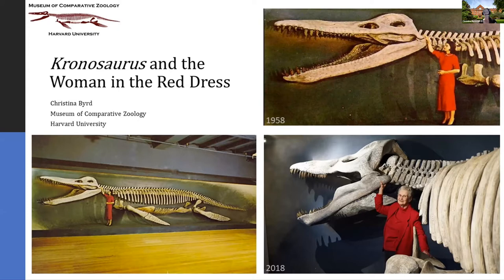The scheduled model for the photo shoot had to cancel, so Romer, in a panic, came up with a solution. He called down to his vertebrate paleontology preparation lab to ask Constance if she owned a red dress and if she could help with the photo. Today, Kronosaurus queenslandicus is the logo for the MCZ and is a visitor destination for its exhibits in the Harvard Museum of Natural History. Along with Kronosaurus, the image of Constance standing with it became an icon in its own right.